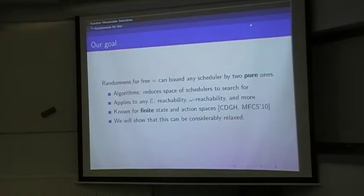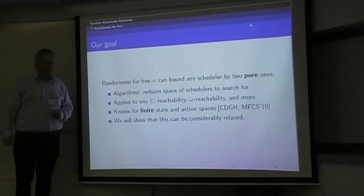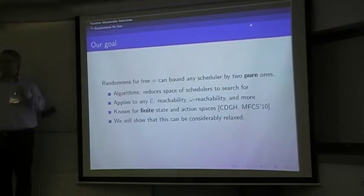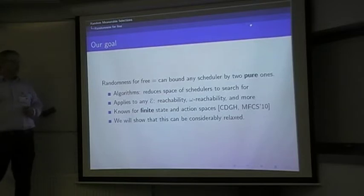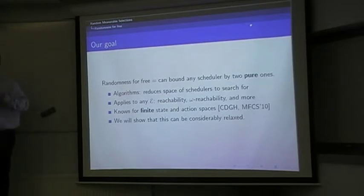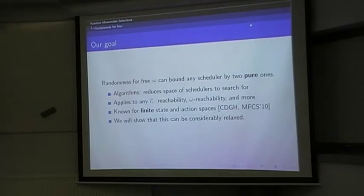We would like this to work for any measurable set E, so that includes reachability objectives, the set of paths which go through one point, omega reachability, the set of paths which go infinitely often through a certain set of points, and so on. This has been proved by Chatterjee, Doyen, Gimbert, and Henzinger in 2010 for finite state-and-action spaces. Our goal is to show that this can be considerably relaxed.